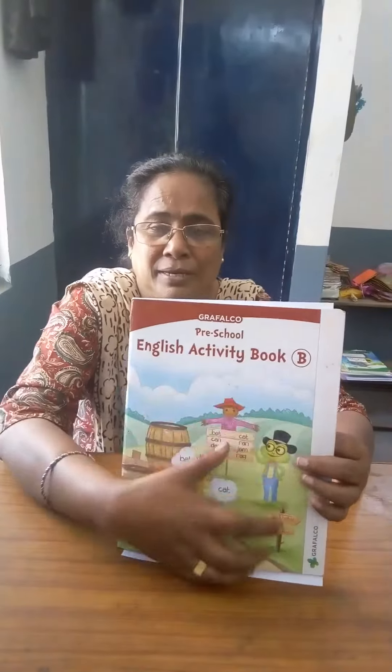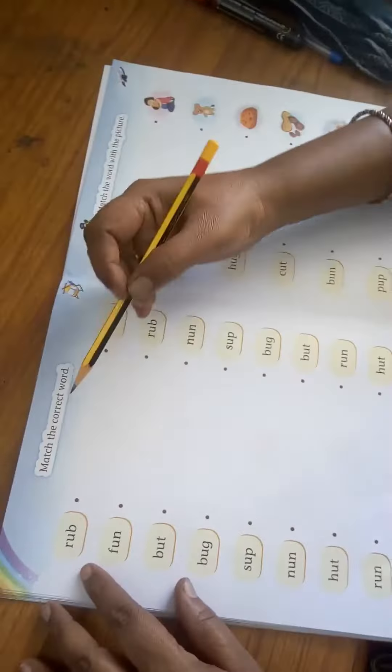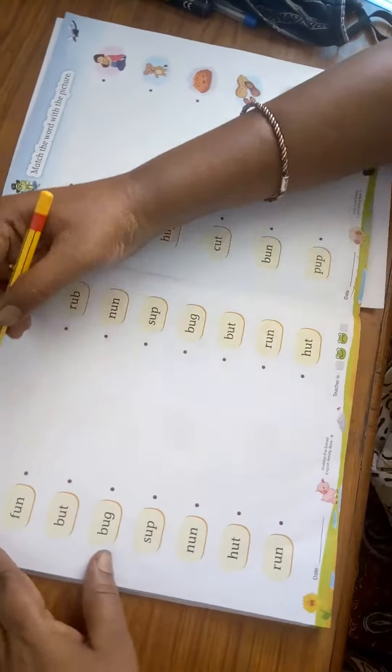English activity book B, page number 48 and 49. See word to word. I will read out the words for each other.